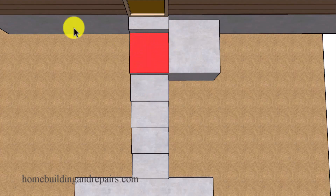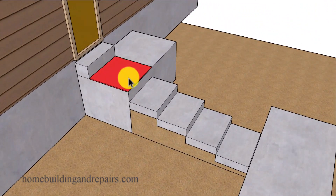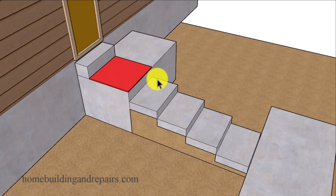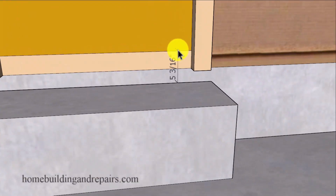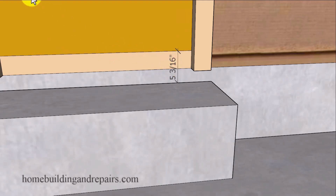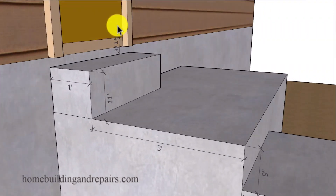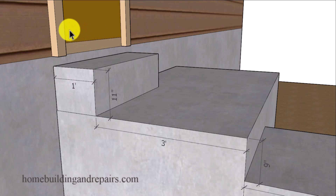As long as you have a landing that your local building department will approve, that is usually going to be the width of the stairway in depth. Here we have a three-foot wide stairway and a three-foot depth. We have a few riser variations — coming out of the house at the top of the floor, we have about five and three-sixteenths of an inch for our riser. This usually won't be a problem if the door swings into the house and not over the steps.